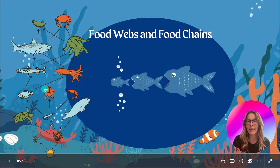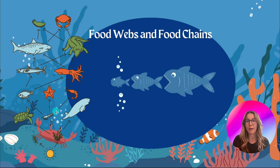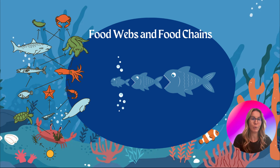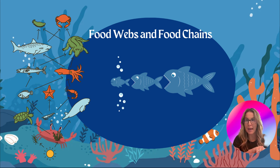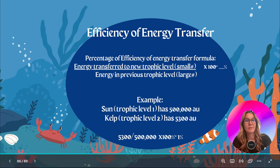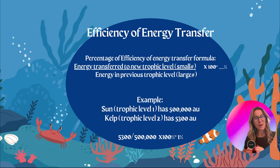For example, if this krill was eliminated — it no longer existed — that means this fish, this sea star, and this shrimp would all be directly impacted because that is where they are getting their food from. And of course, everything that consumes the fish, sea star, and shrimp would also be impacted. We would see this food web shrink.